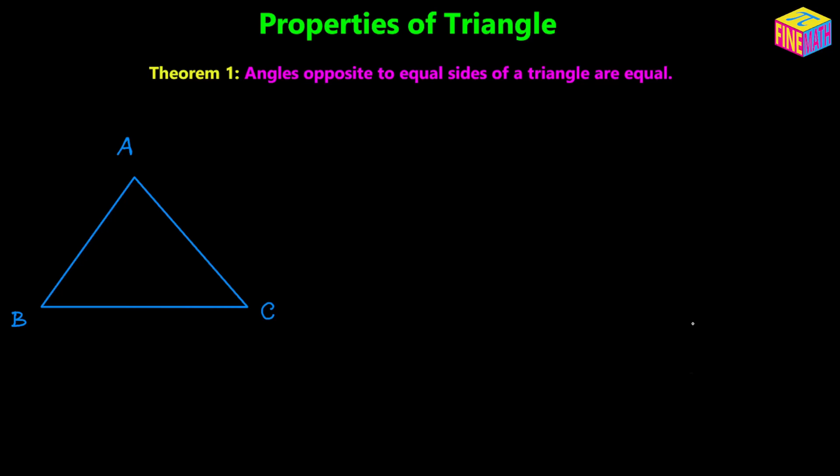So here we are going to prove that angles opposite to equal sides of a triangle are equal. Let's suppose that we have a triangle ABC as in the diagram, and according to the construction the sides AB and AC are equal, as I have denoted in the diagram. In order to prove this theorem we have to draw an angle bisector for angle A, so let me draw the angle bisector first.